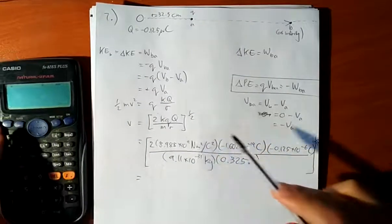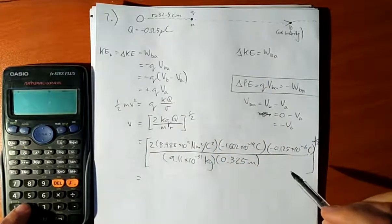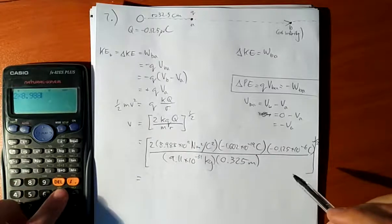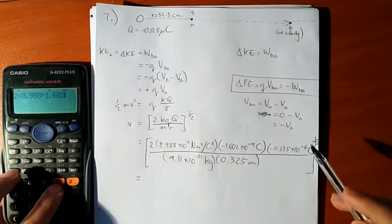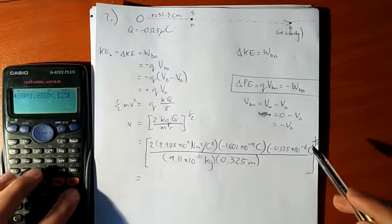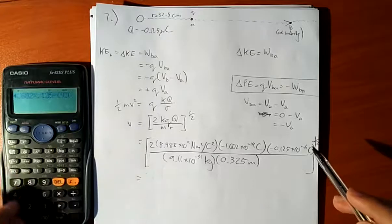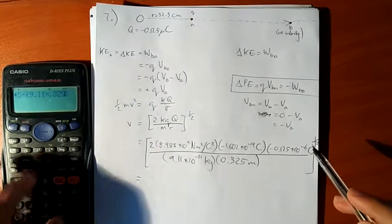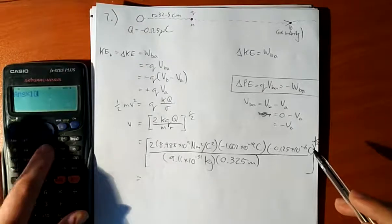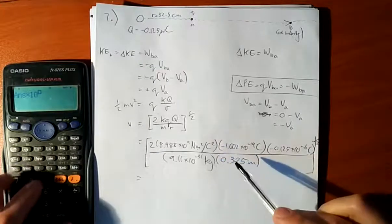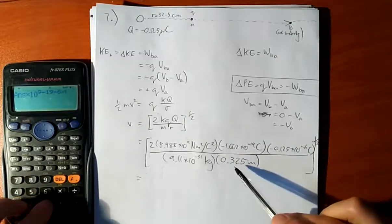So, I'm going to ignore the powers of 10 to make it simpler. So I'm going to say 2 times 8.998, minus is cancelled. Multiply 1.602 times 0.125 and divided by 9.11 times 0.325. Okay. Calculate that. And then work out times 10 to the power. What will this be?